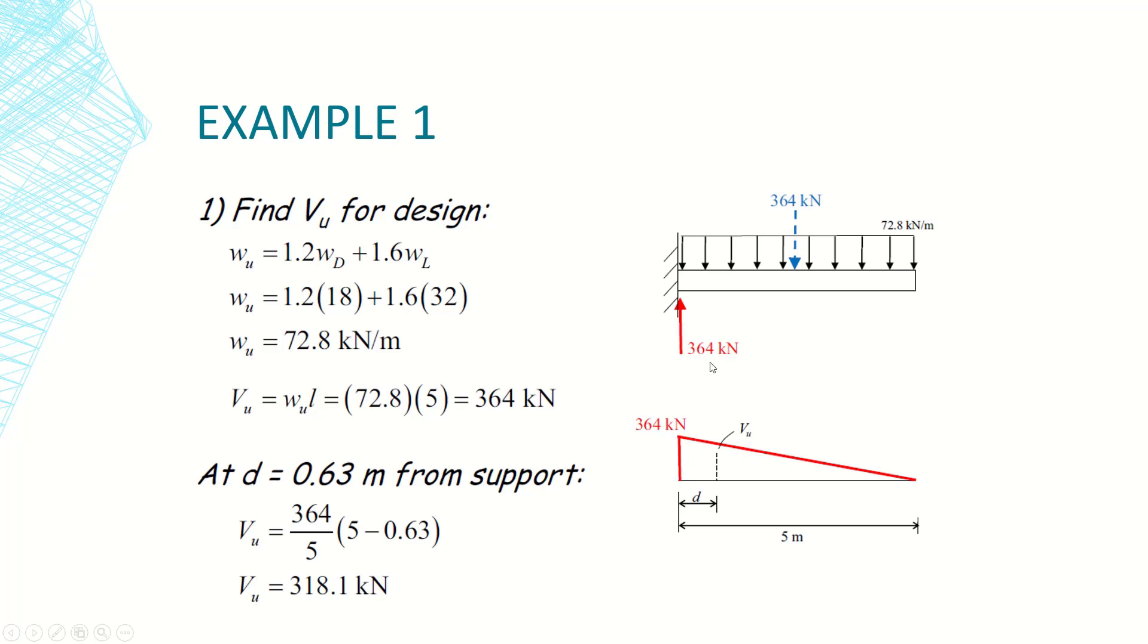The load here is equal to the intensity times the span, so 72.8 times 5 which is 364 kN. Summation of forces in y equals zero for this beam, so the reaction will be equal to 364 kN. However, as per code in shear design, we consider the shear value at distance d from the face of the support.